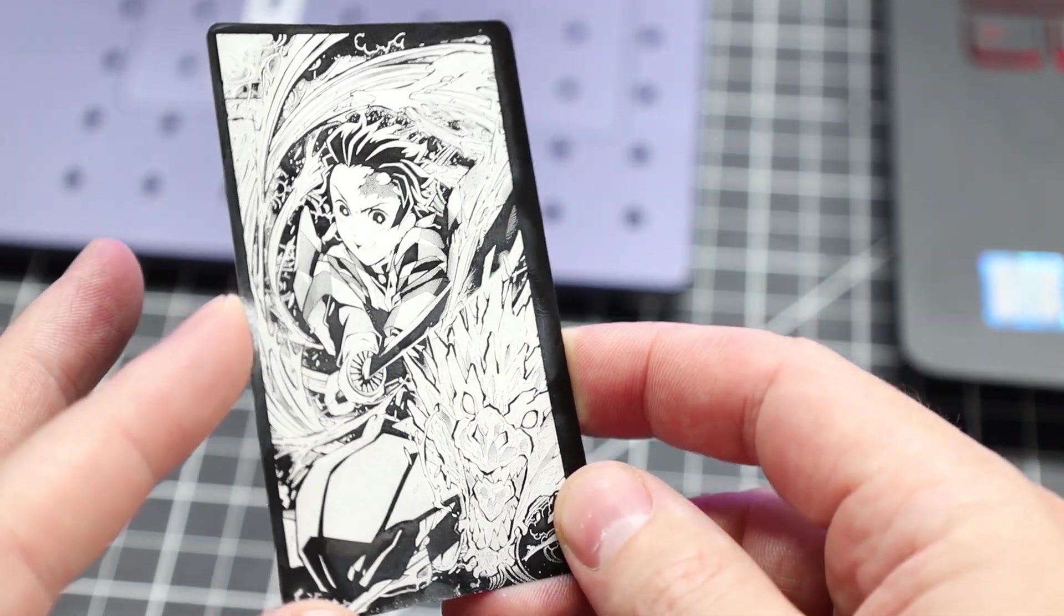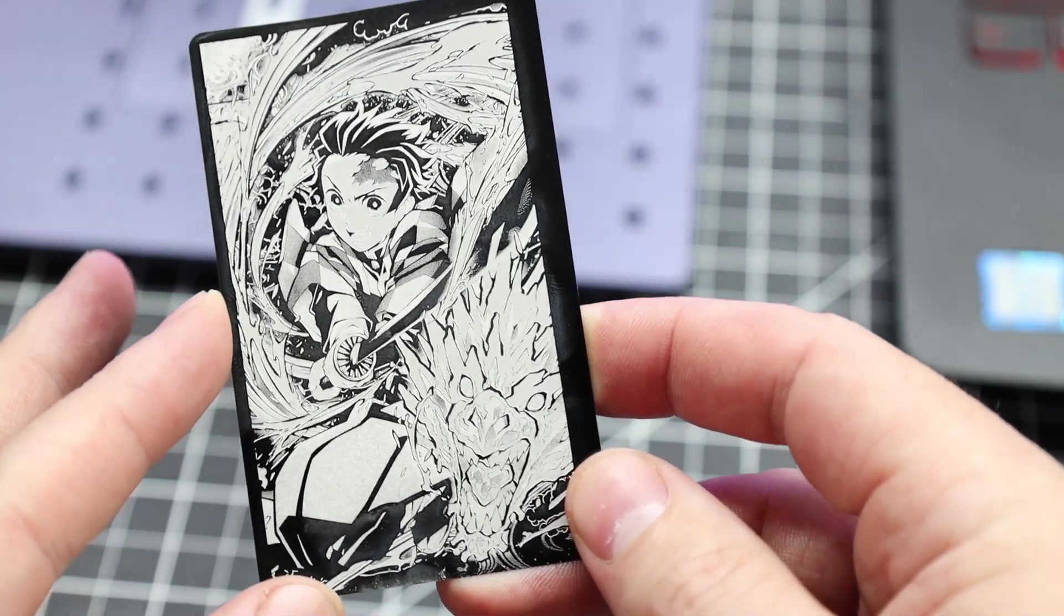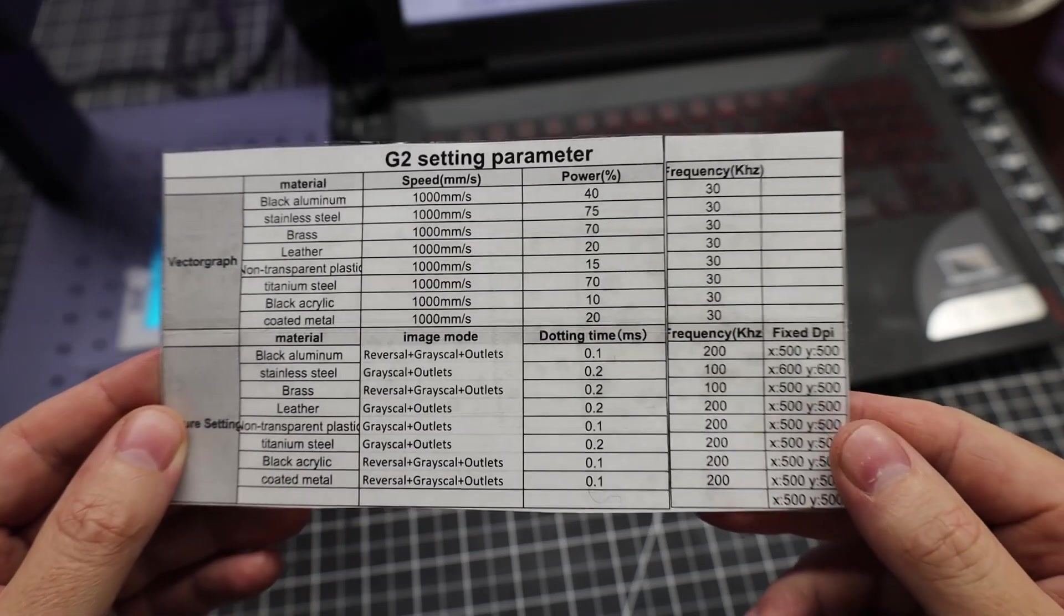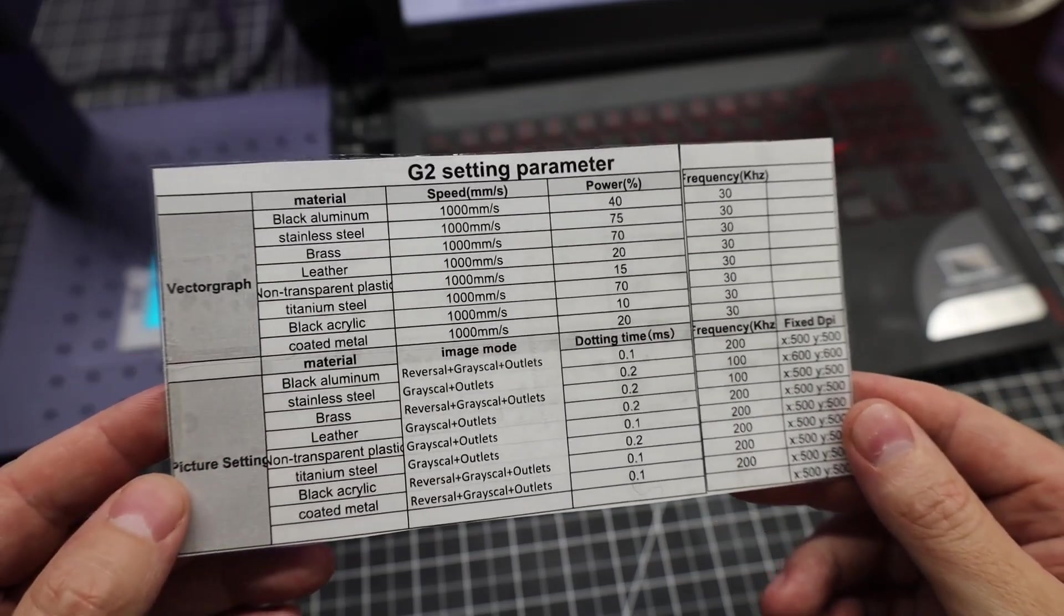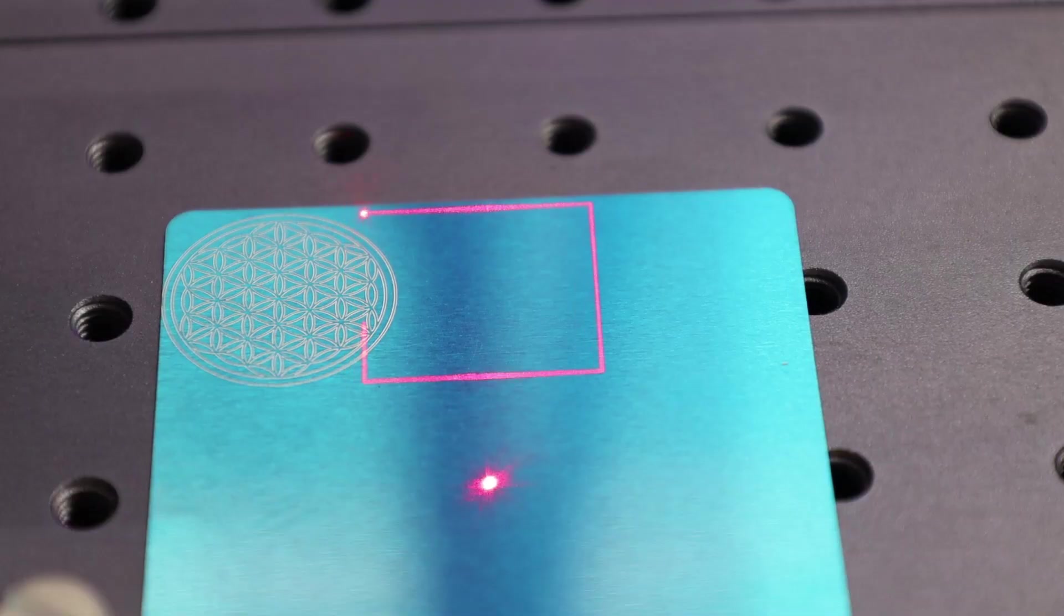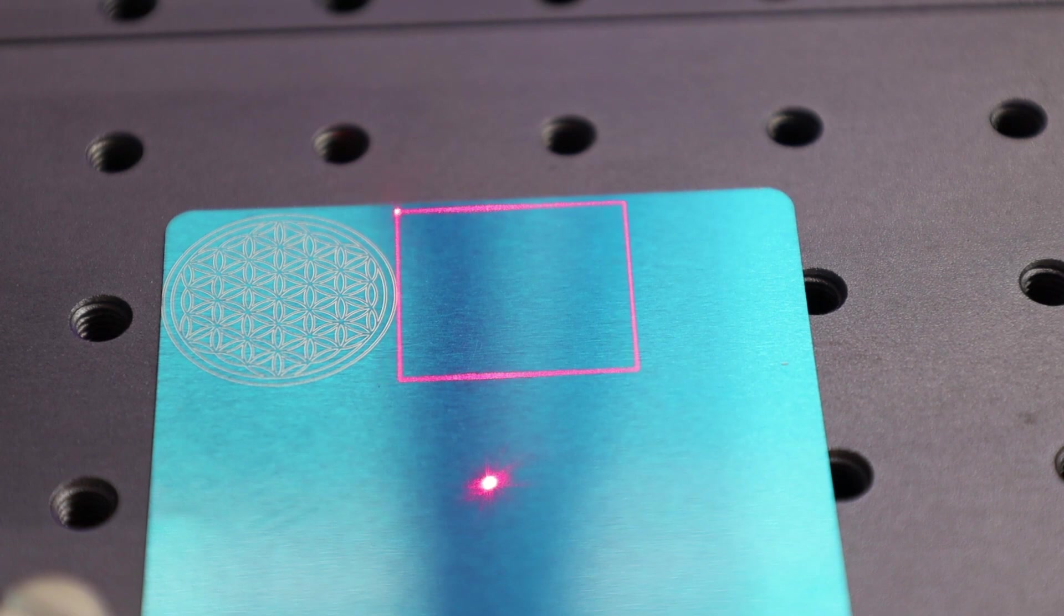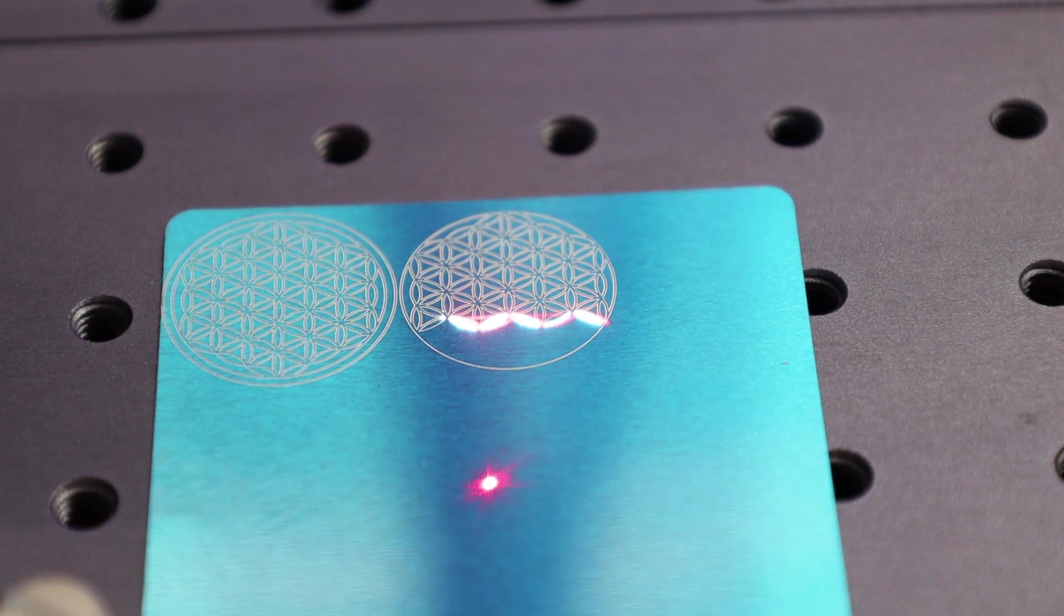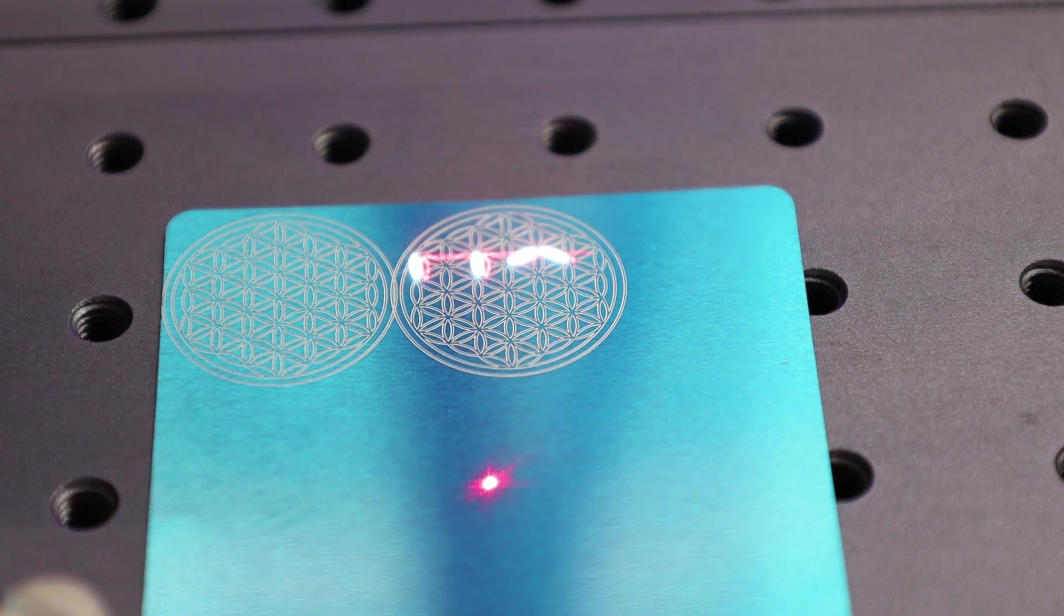And this did come with some basic starting points for settings for different materials and what you're doing with them. But these are just starting points, and you're still going to have to fine-tune things to get the best results. This laser does have a red light marking laser as well, so you can see an outline of where you're going to be cutting or engraving. You can also move it in real time, so you can position everything exactly how you need it.